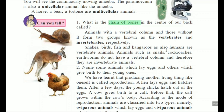If the vertebral column is absent, the animal is called an invertebrate. Snakes, fish, kangaroos, and humans are vertebrates because the vertebral column is present in these animals. Snails, cockroaches, and earthworms do not have a vertebral column, therefore they are invertebrate animals.